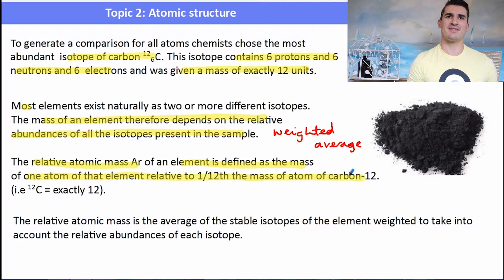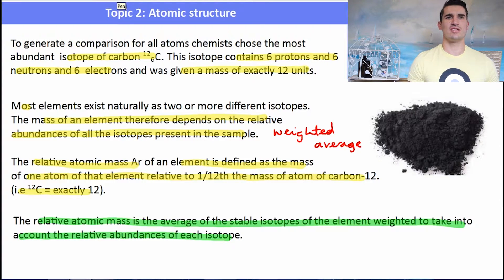Now the relative atomic mass, given the symbol Ar, is defined as the mass of one atom of that element, relative to one-twelfth the mass of an atom of carbon, where the carbon weighs exactly twelve atomic mass units. That is a definition that you need to know. The relative atomic mass is the average of the relative isotopes, the naturally occurring isotopes, and it takes into account the relative abundances and the isotopic masses.